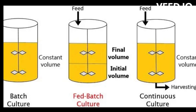An example of a batch culture is growing bacteria in a test tube with a fixed amount of nutrient medium. The culture is incubated until the cells reach a certain density and then harvested. Batch culture is simple and easy to perform.